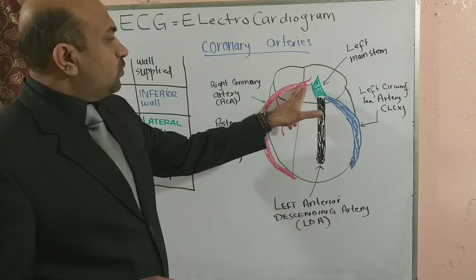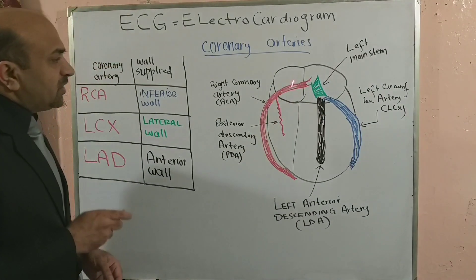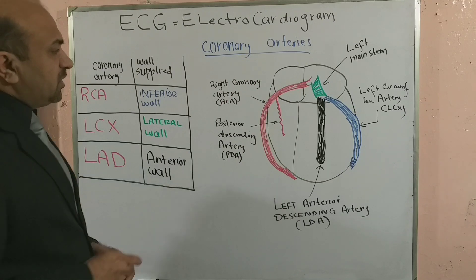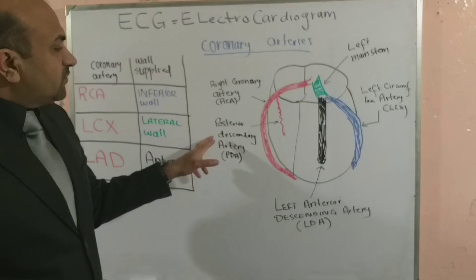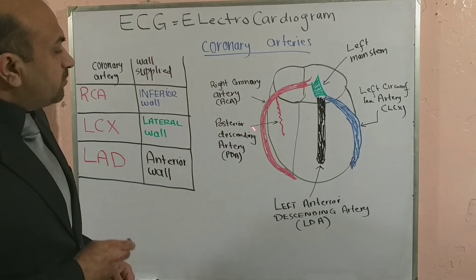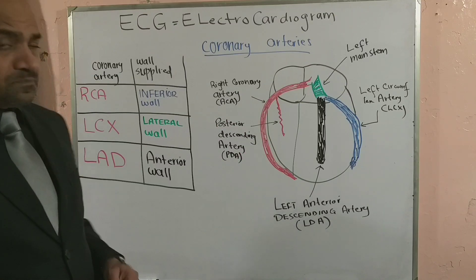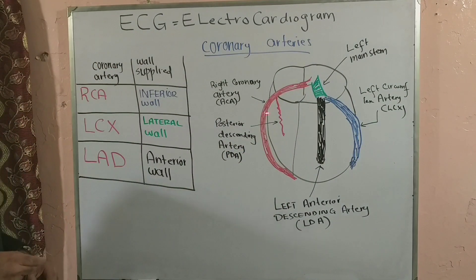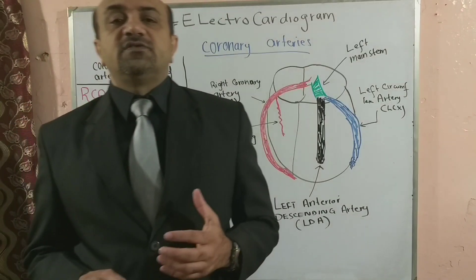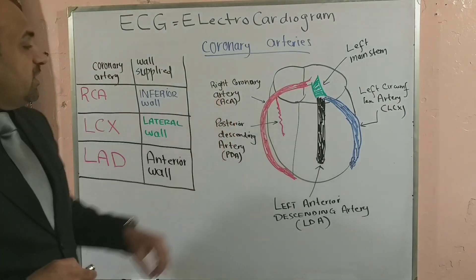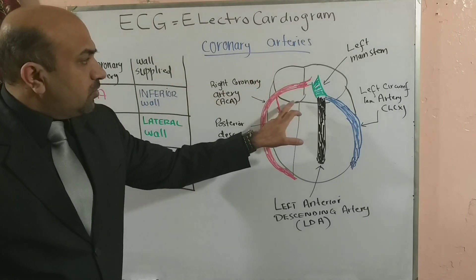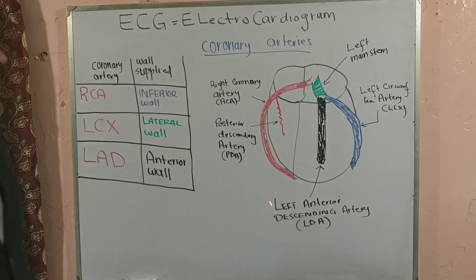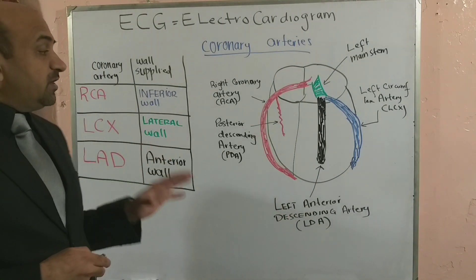Just outside of the aortic valve on the right side is the right coronary artery. In 70 percent — or a little above 70 percent — of cases, the right coronary artery gives off the posterior descending artery, which makes it the dominant coronary artery. This posterior descending artery supplies the septum. The right coronary artery also supplies part of the septum, the AV node, the SA node, and the inferior wall.